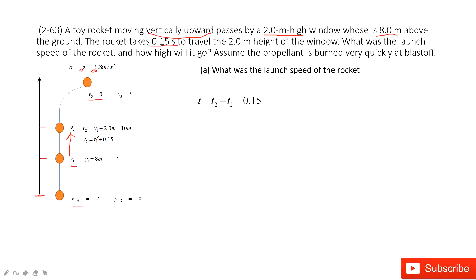First, we can say the time taking for this part is 0.15 seconds. We can write the equation from y2 to y1. So y2 equals y1 plus v1 times t plus one-half a t squared. The acceleration is negative g. We can input the numbers: 10 meters equals 8 meters plus 0.15 times v1. When we input all the known quantities, we get v1 is 14 meters per second.